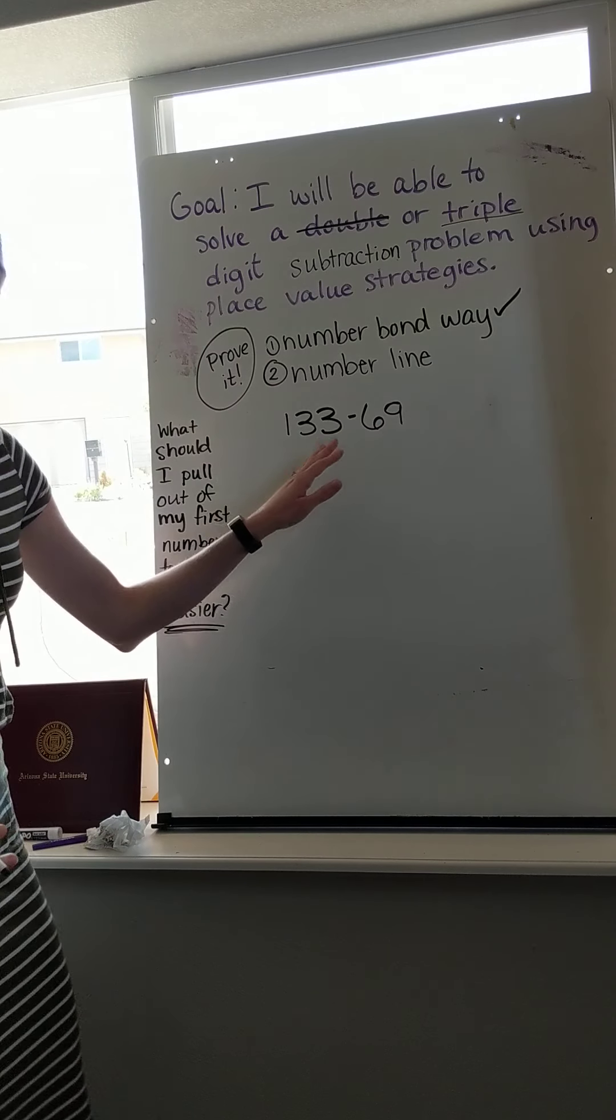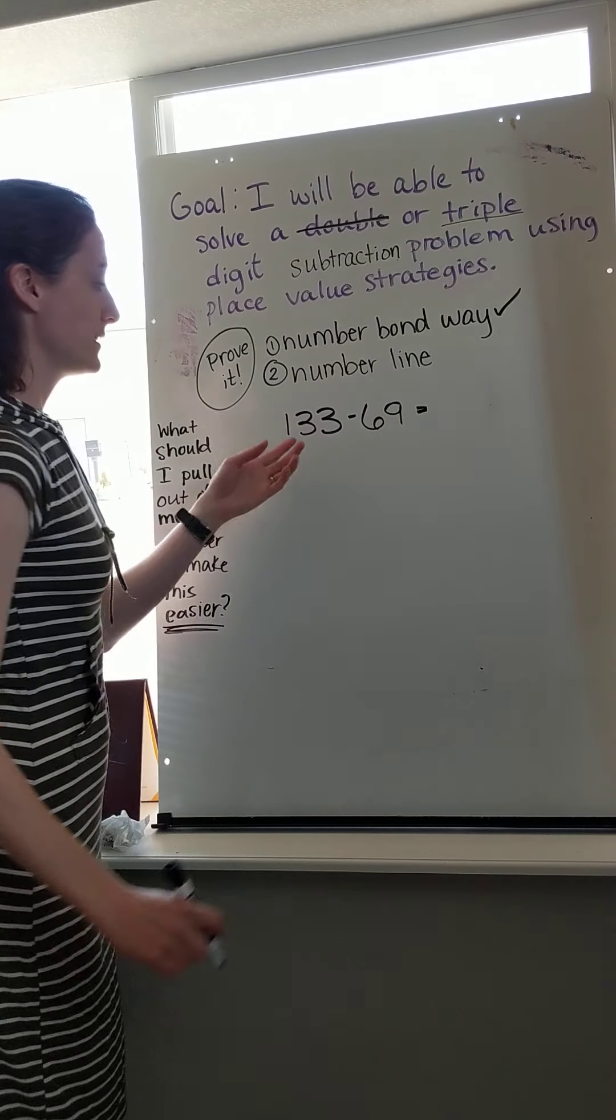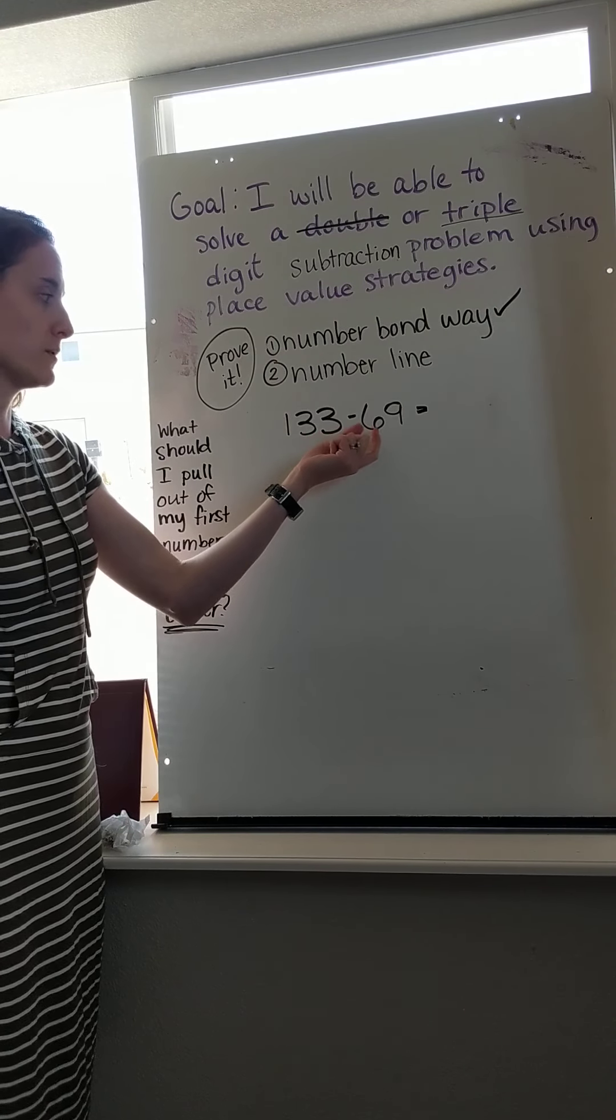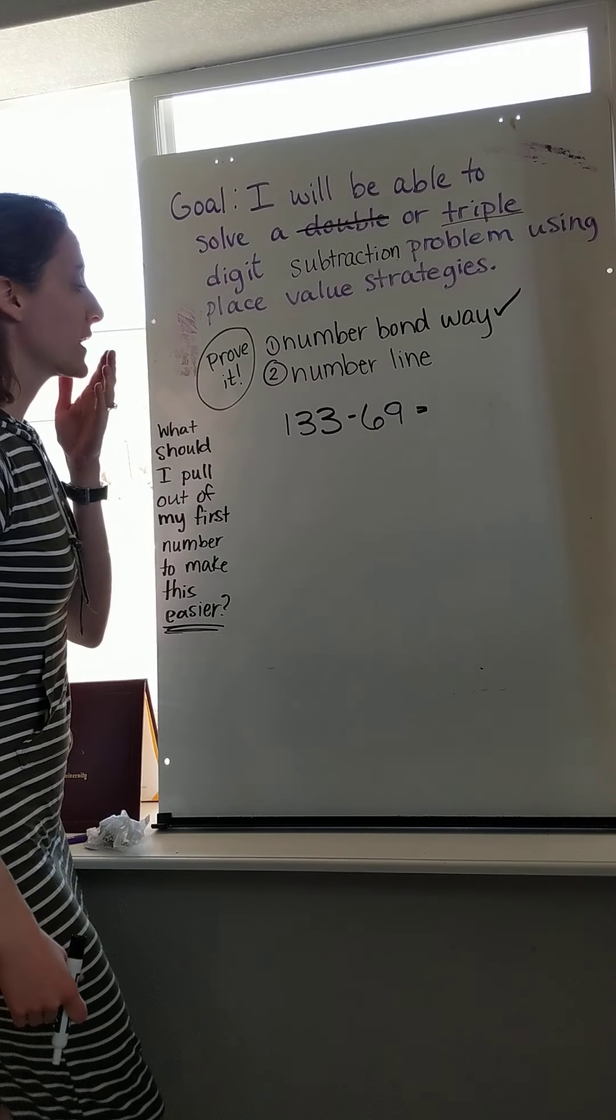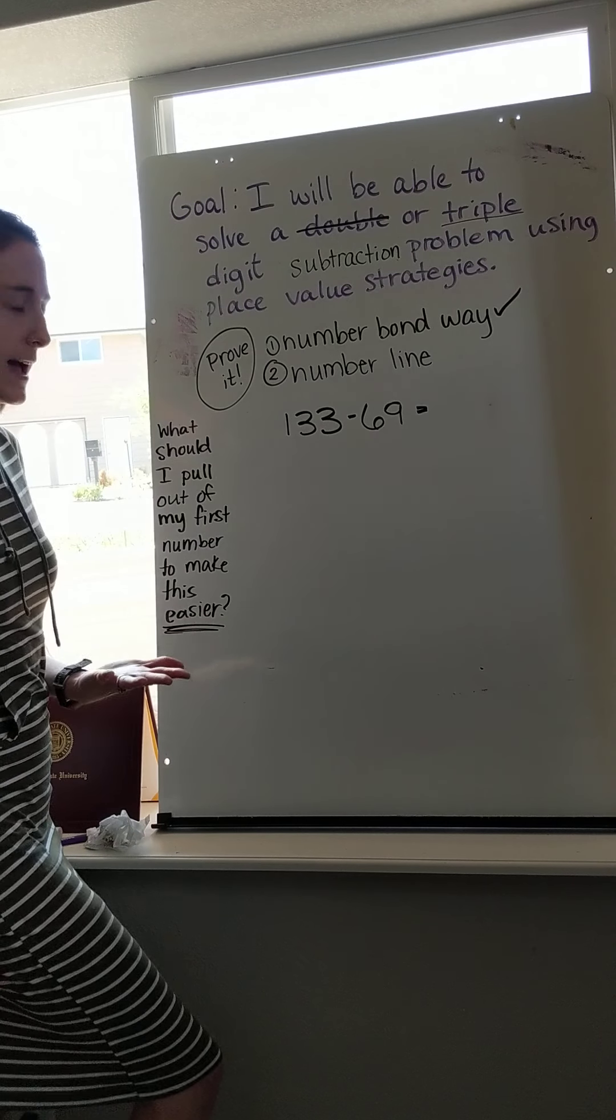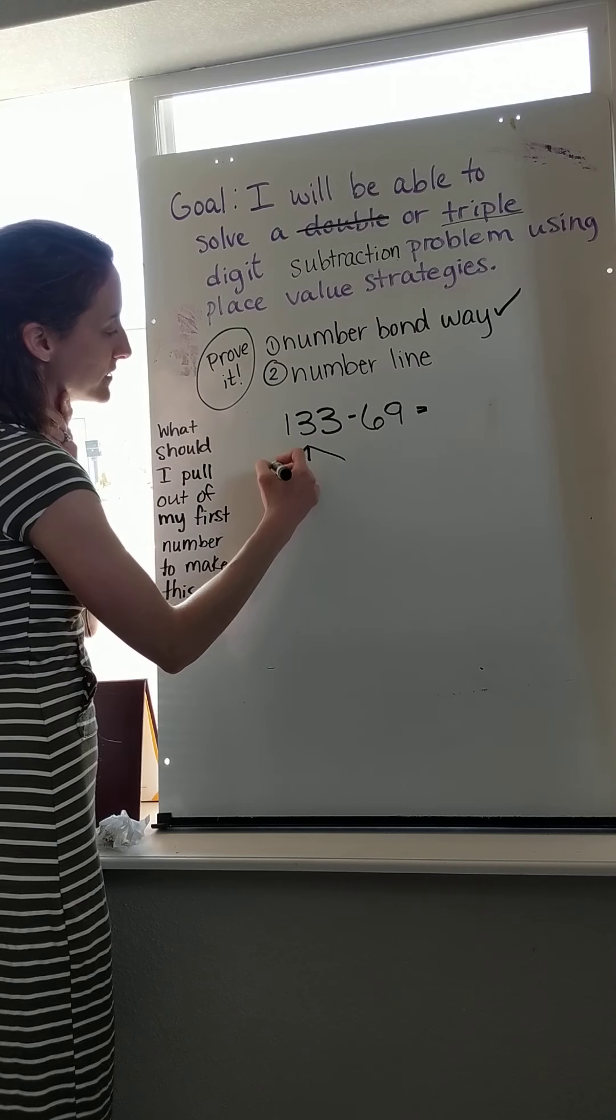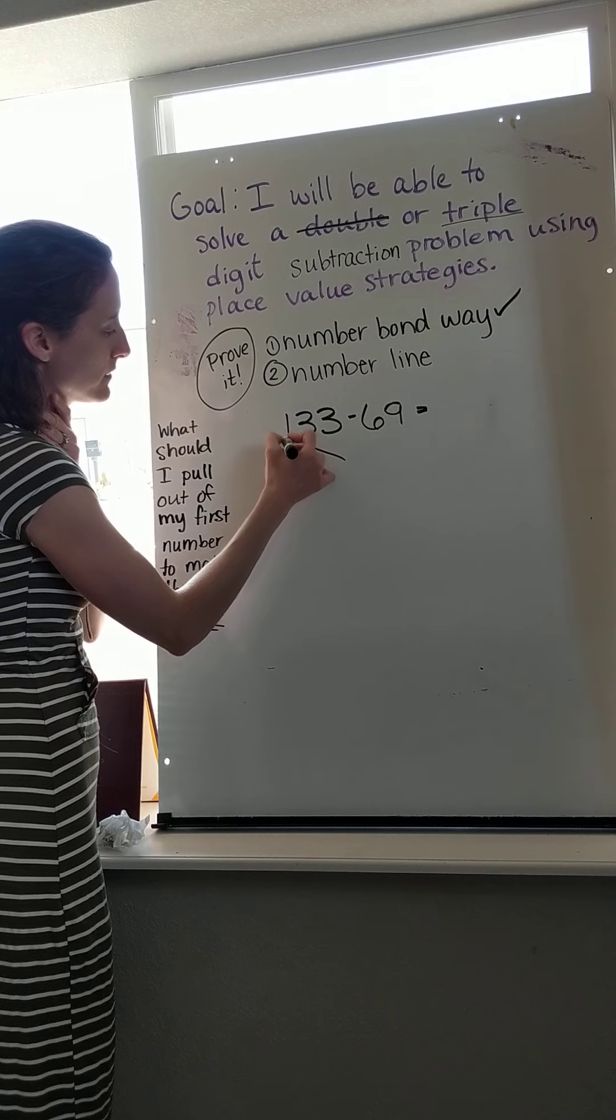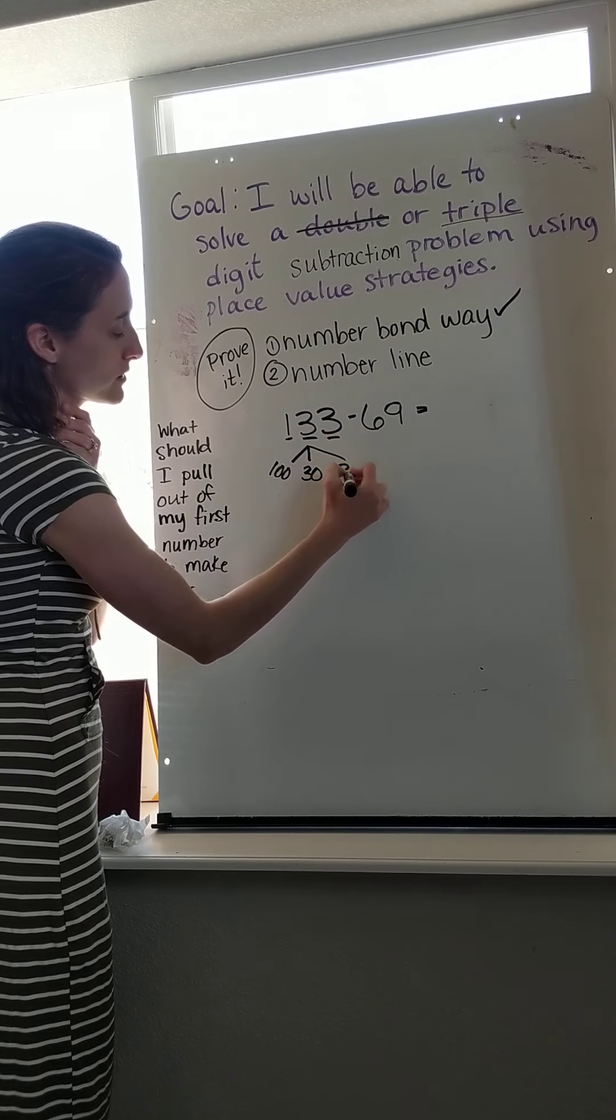As soon as I see this, I know that I have a problem because I cannot easily subtract 9 from 3 ones or 6 tens from 3 tens. So I have to split apart this number to make it easier for myself. If I pull this number apart, I'm going to look at all the parts. It's 133. So this is worth 100. This digit is worth 30. This digit is worth 3.